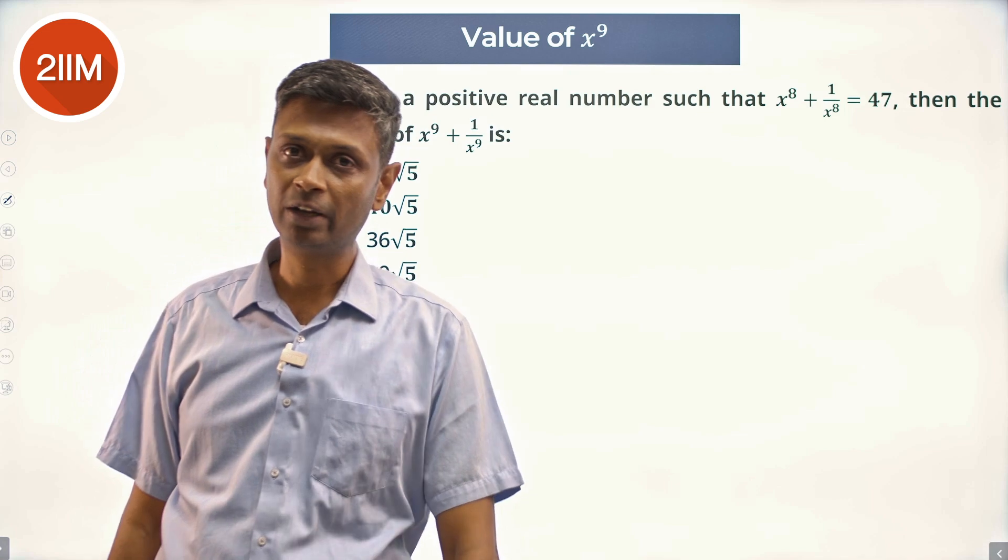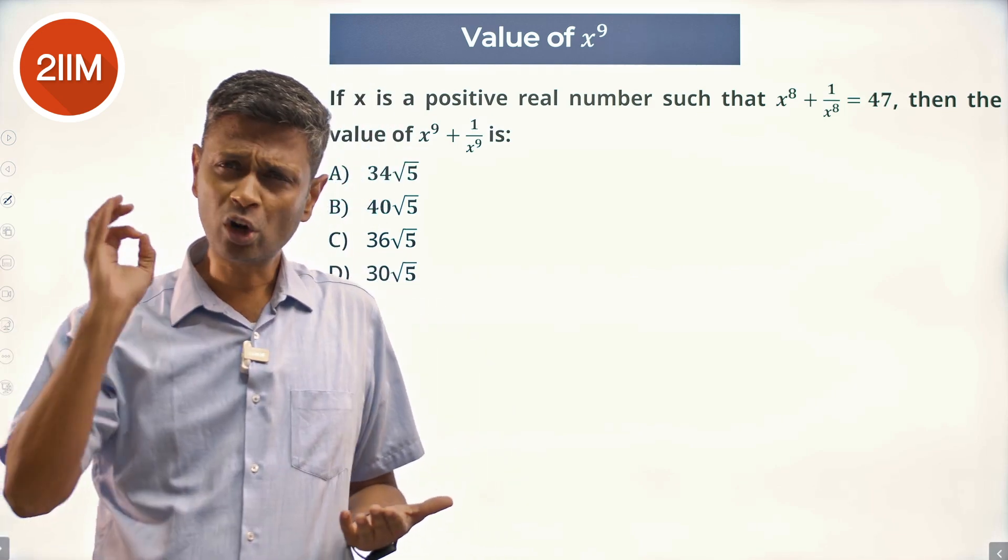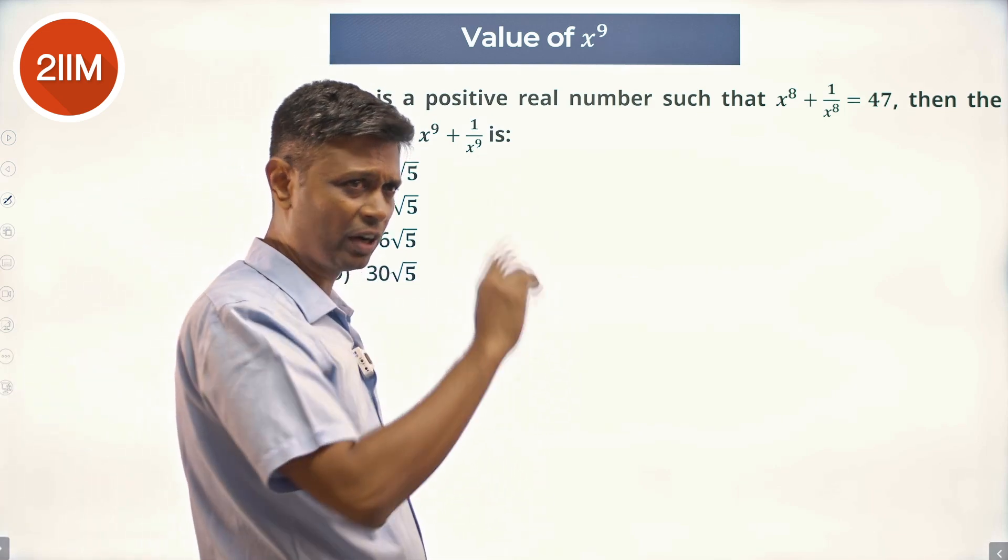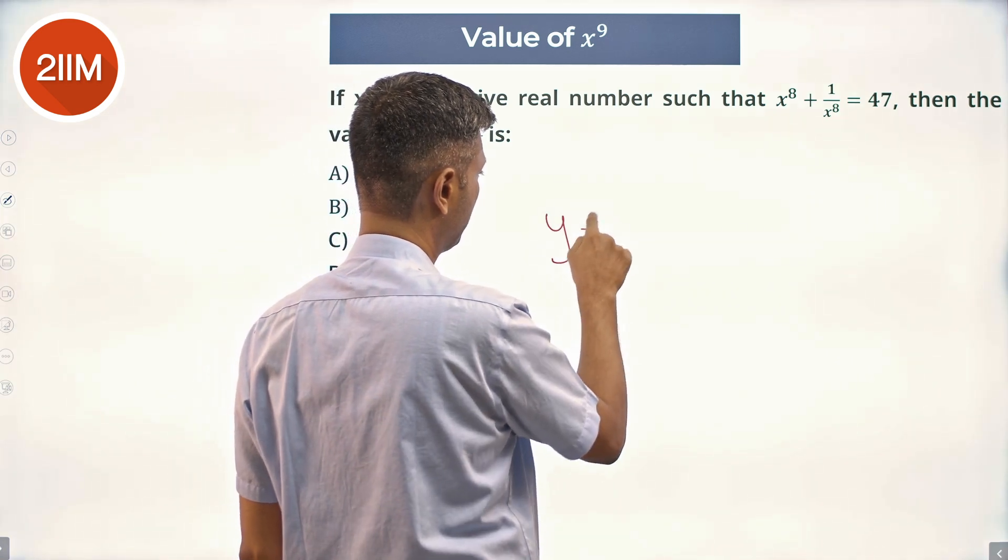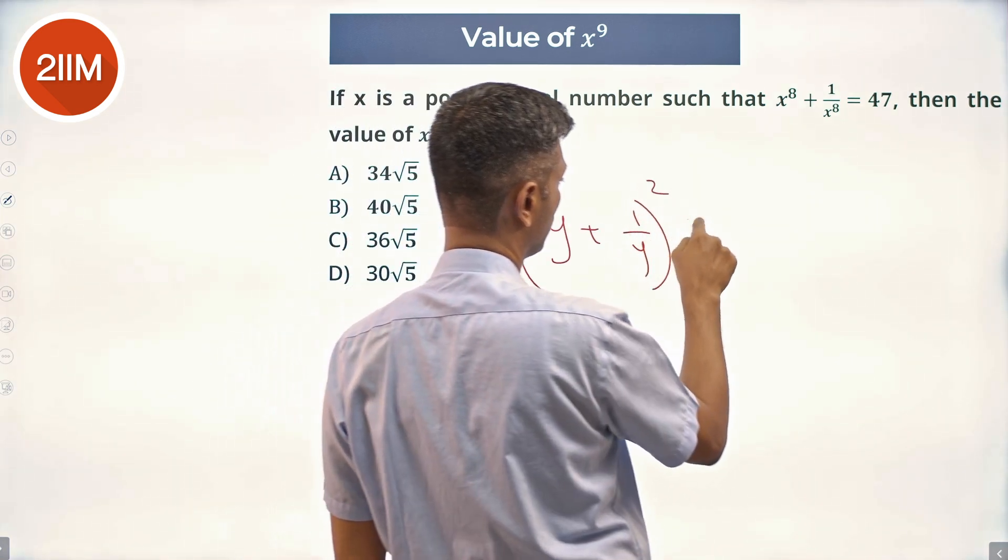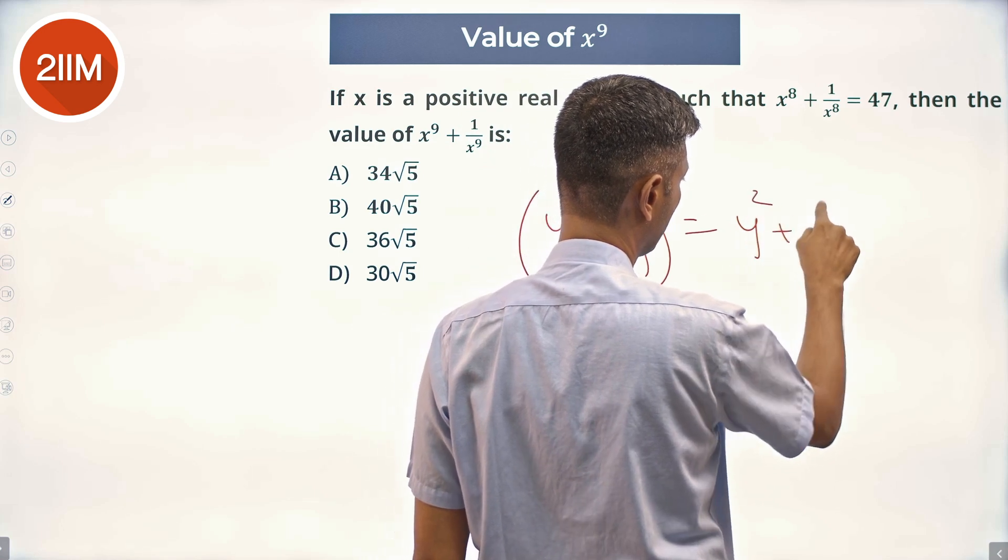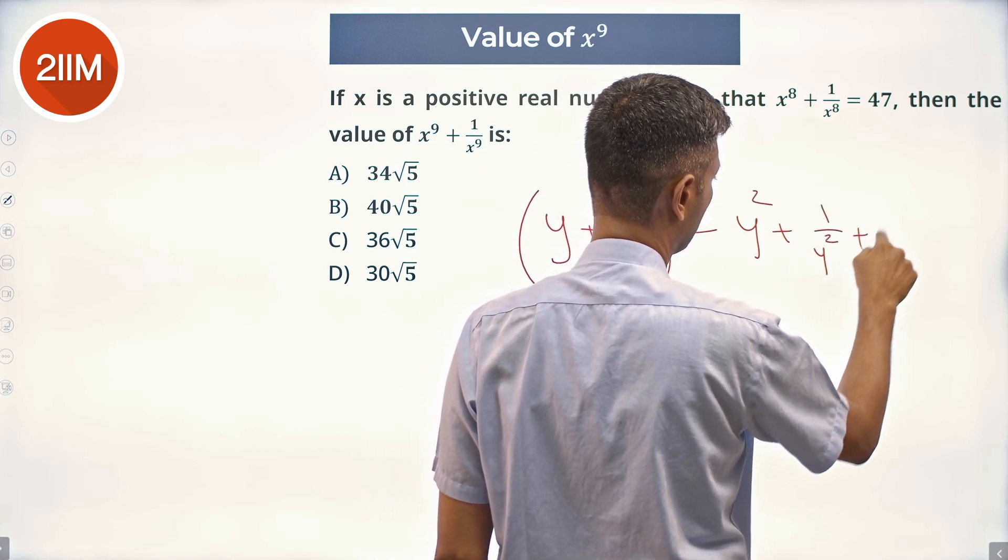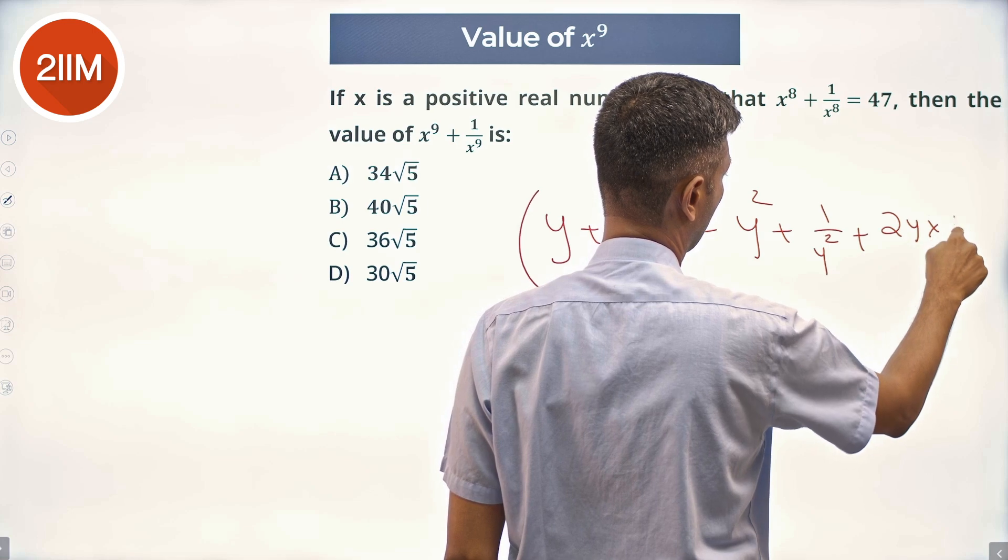x^8 + 1/x^8, it all depends on this one fundamental formula. When you use a different variable, (y + 1/y)^2 = y^2 + 1/y^2 + 2(y)(1/y).